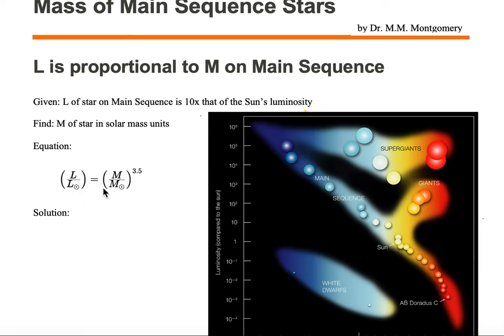is equal to open parentheses M over M sun, close parentheses, to the 3.5 power. So the luminosity relative to the luminosity of the sun is proportional to mass of the star relative to the mass of the sun.